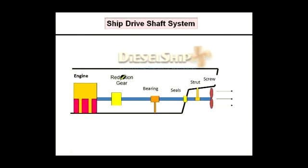This is the pictorial representation of the entire shafting system of a ship. Here is the propeller connected to the propeller shaft, entering the ship through the stern tube seals, and connected to the intermediate shaft. The intermediate shaft is mounted on the intermediate shaft bearing and, through the reduction gear, connected to the flywheel of the main engine and to the crankshaft.